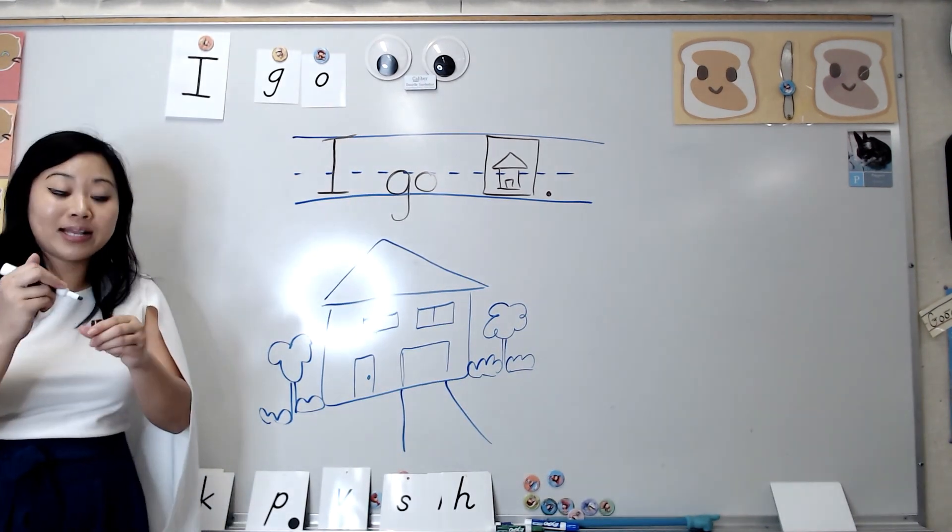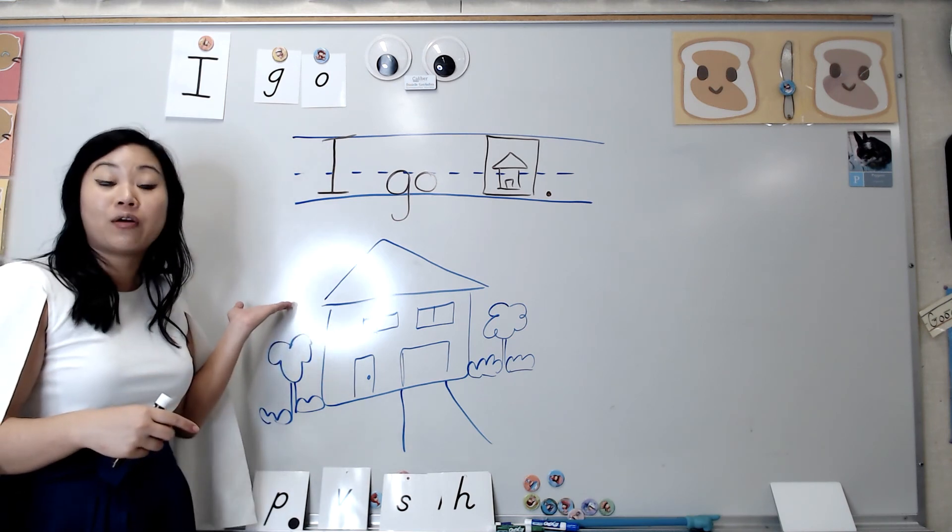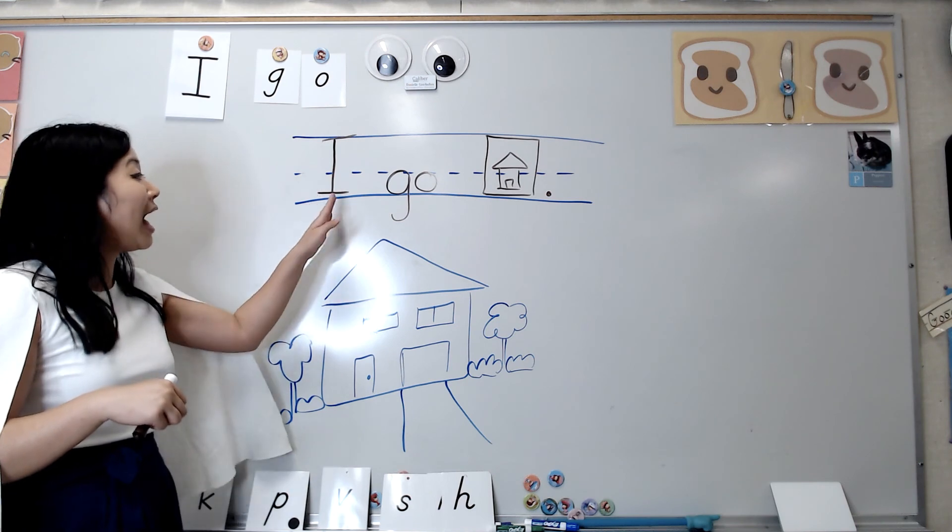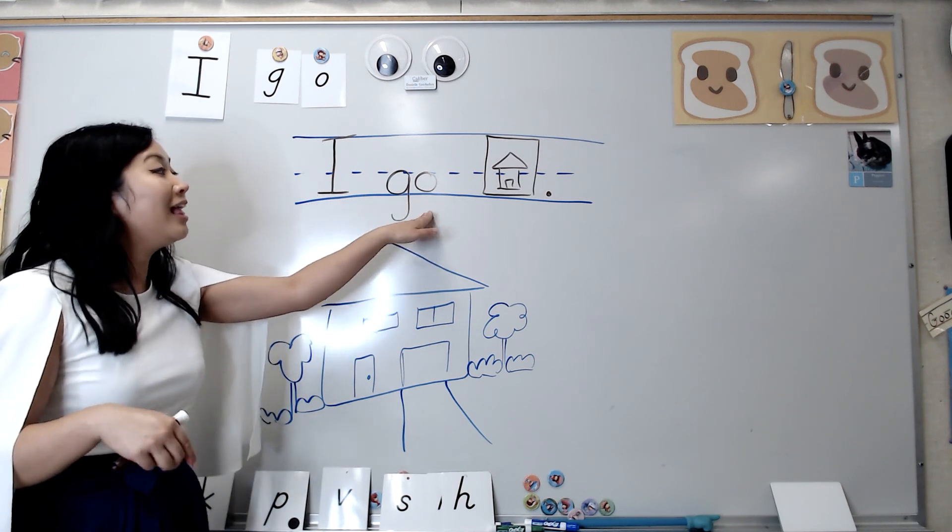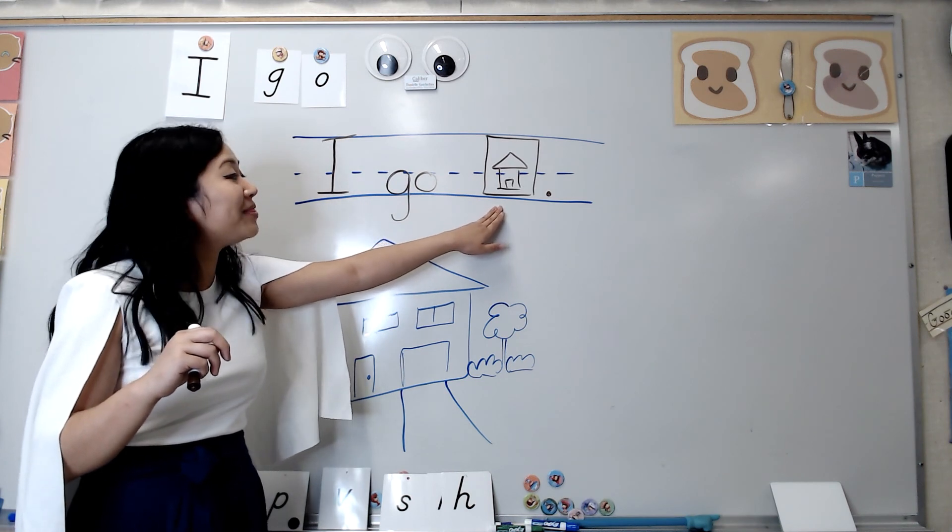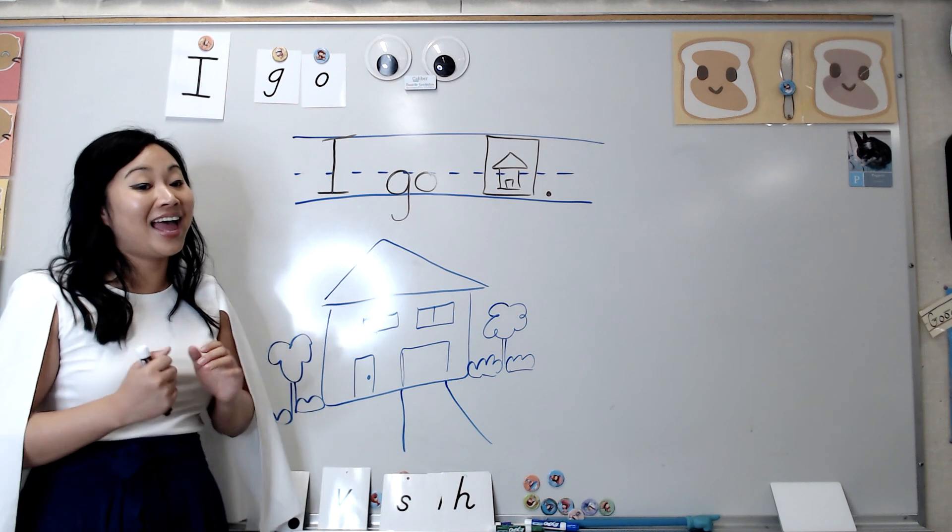So again, friends, your job is first, draw a picture of where you will go. Next, write the words I go. Last, draw a tiny picture of that place on the line, and put a period at the end because that's the end of your idea.